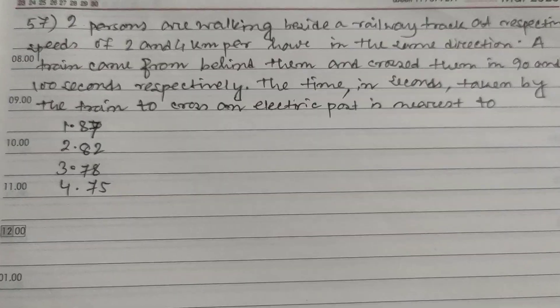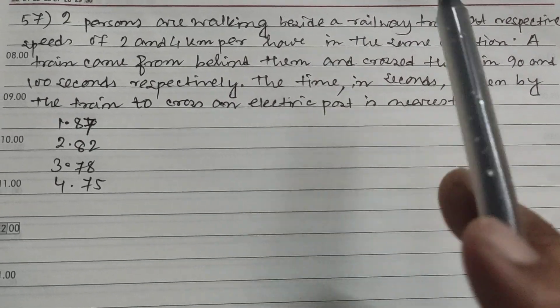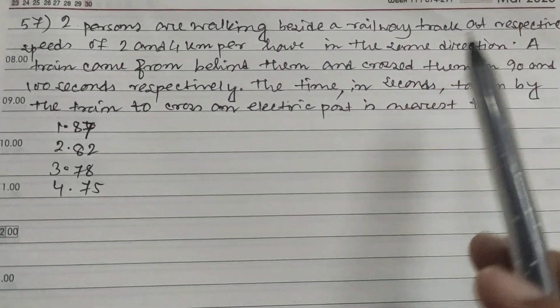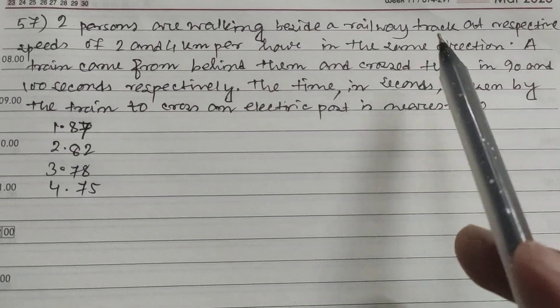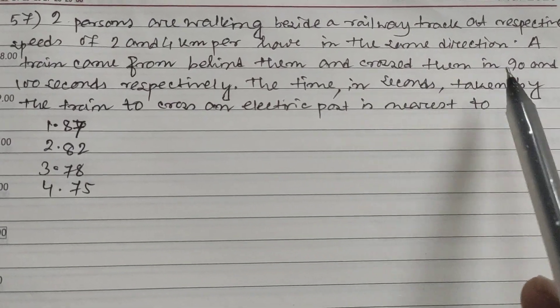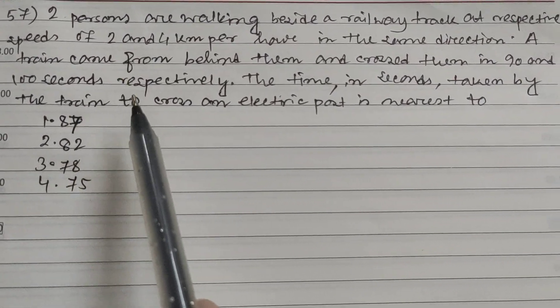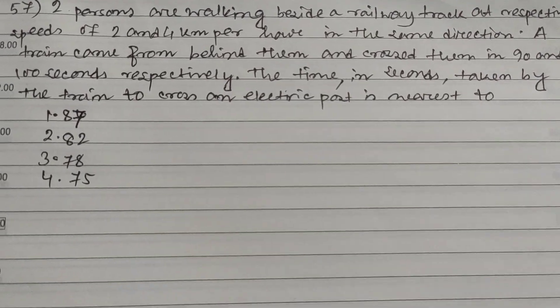Hello friends and students, this is question number 57. Two persons are walking beside a railway track at respective speeds of 2 and 4 km per hour in the same direction. A train came from behind them and crossed them in 90 and 100 seconds respectively. The time in seconds taken by the train to cross an electrical post is nearest to what?